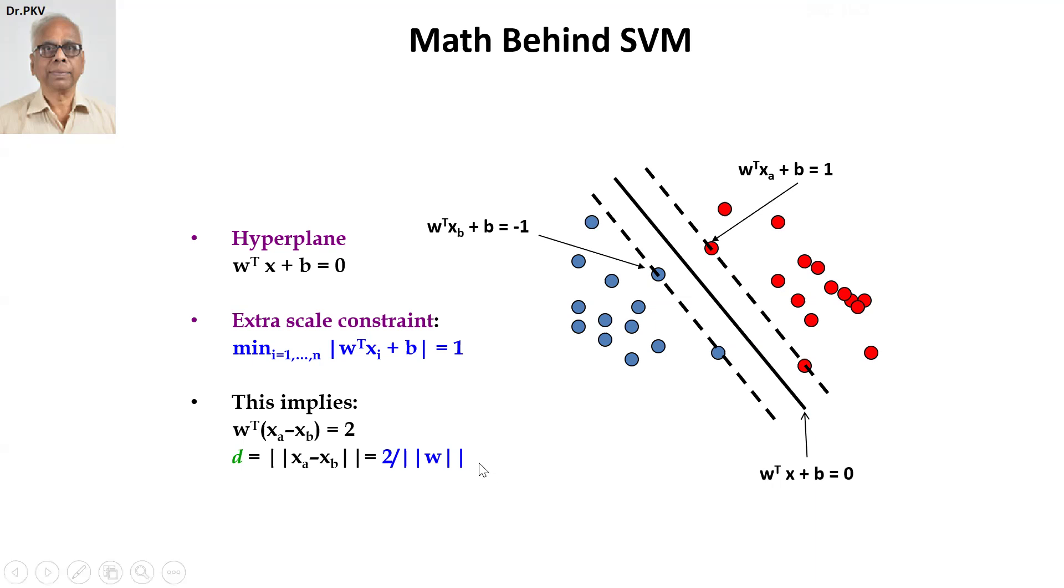Now, if you look at these points 1, 2 on the boundary lines, that is on the line W transpose XB plus 1 is equal to minus 1, there are two points. These are called the support vectors.